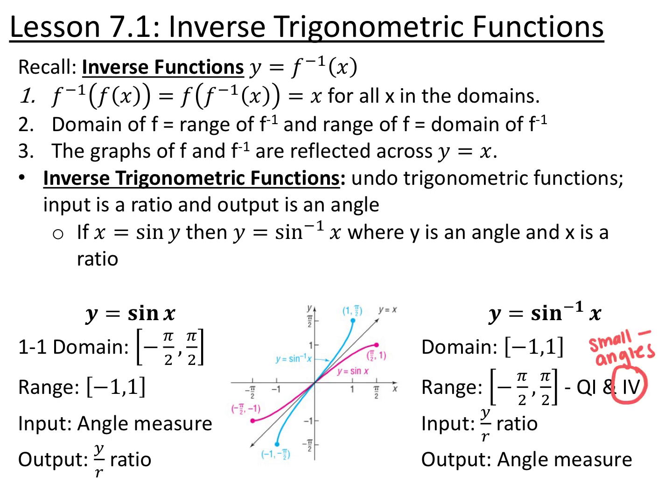If we look at inverse sine, our domains and ranges are flipped. So our domain is now the negative 1 to 1 ratios, and our range — the outputs — are the angle measurements from negative pi over 2 to pi over 2. So on the unit circle, we're only going to be answering for angles in the first and fourth quadrants. In the fourth quadrant, because we go from negative pi over 2 to 0, we answer with small negative angles instead of 3 pi over 2 to 2 pi. The input for inverse trig is your y over r ratio and the output is the angle measurement.